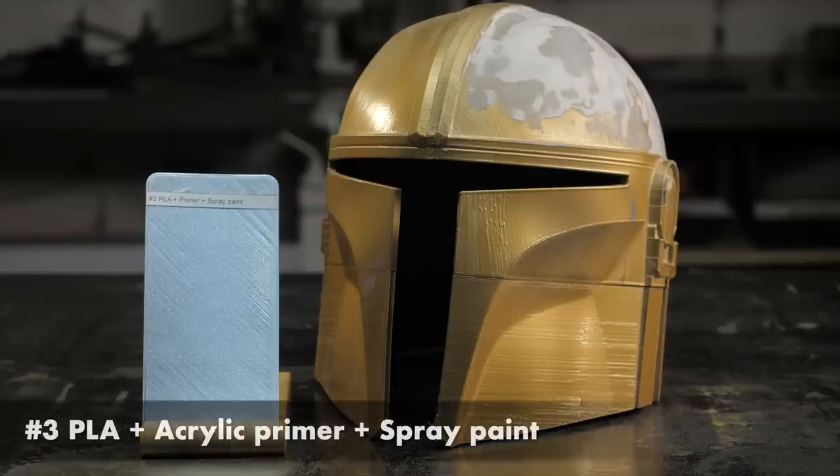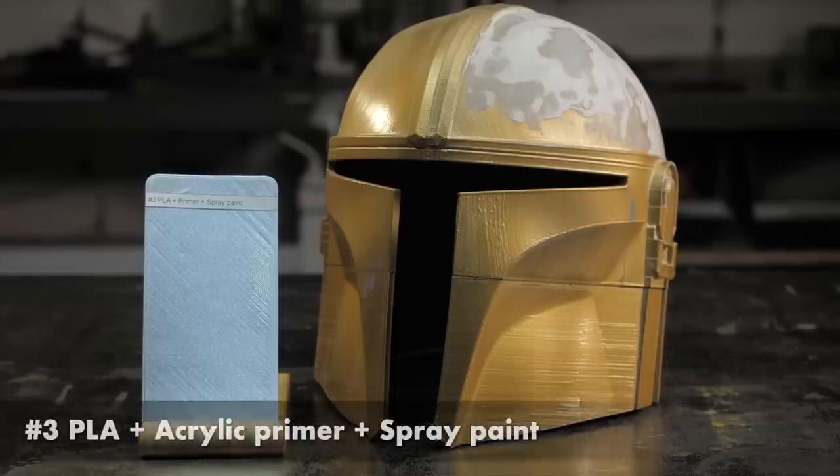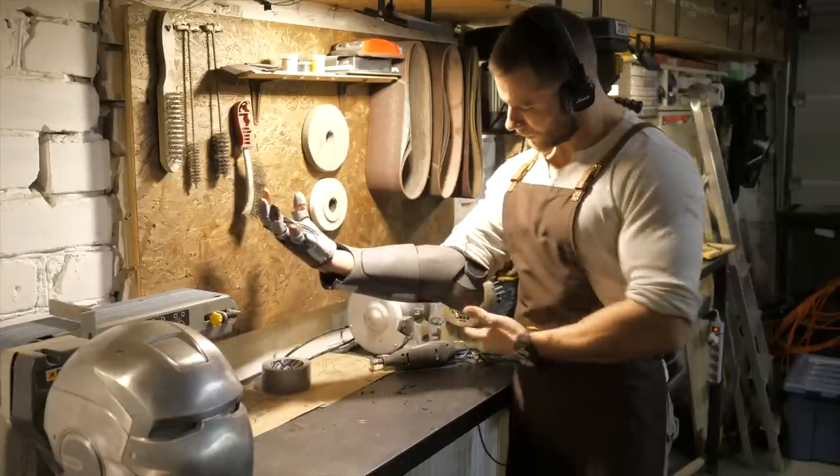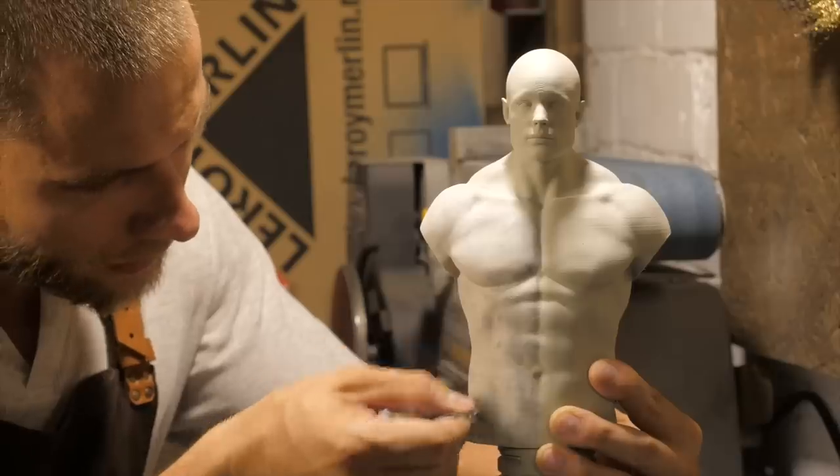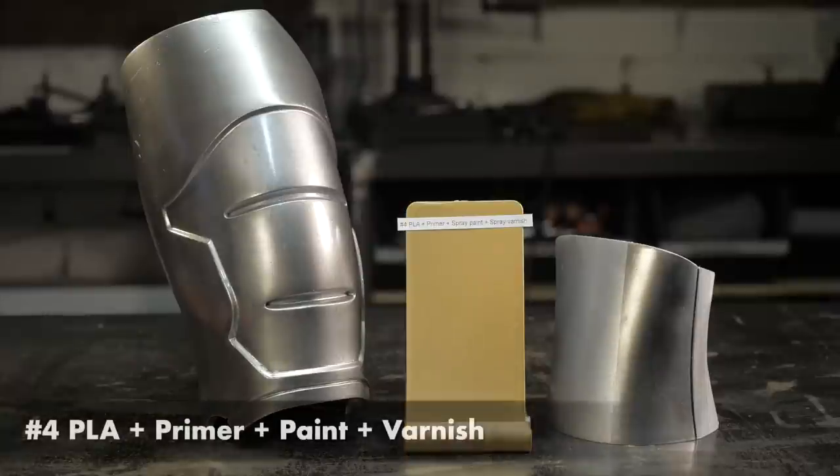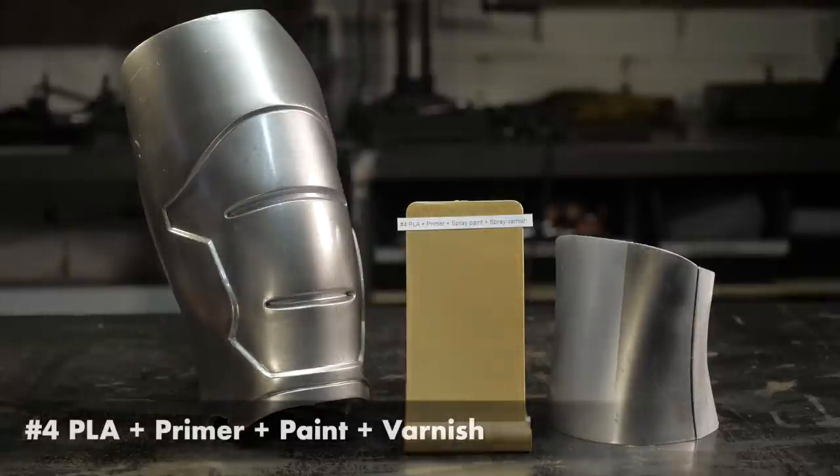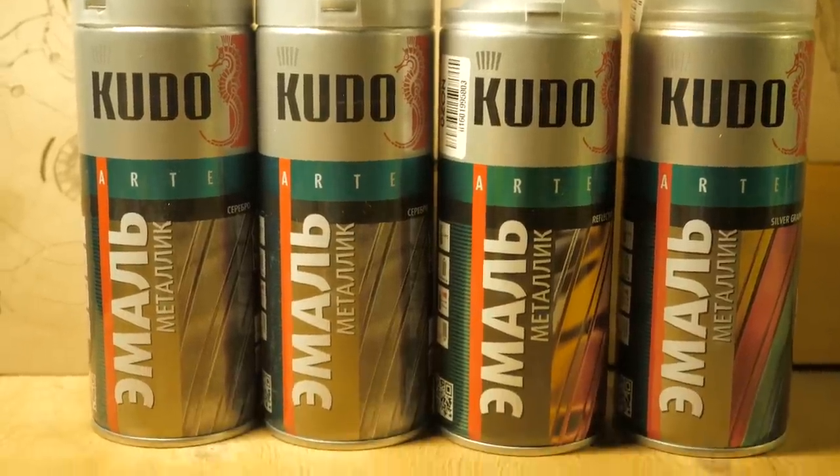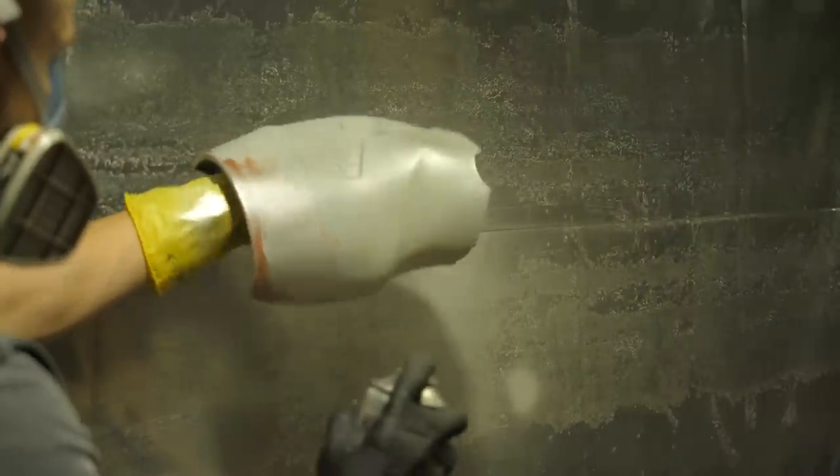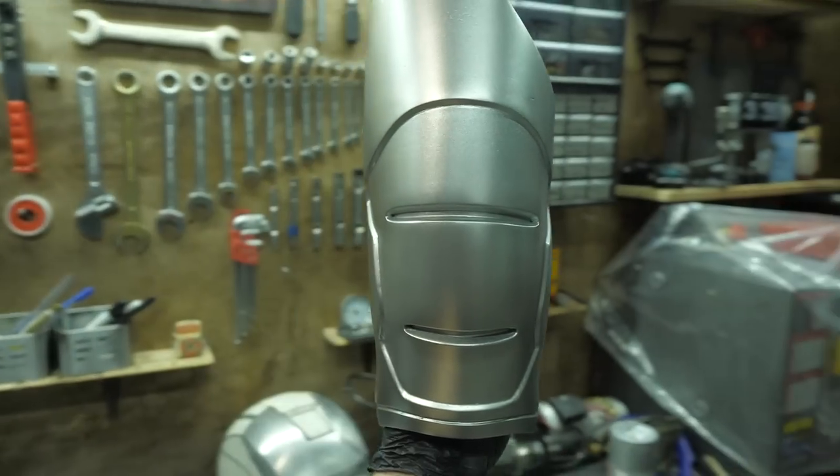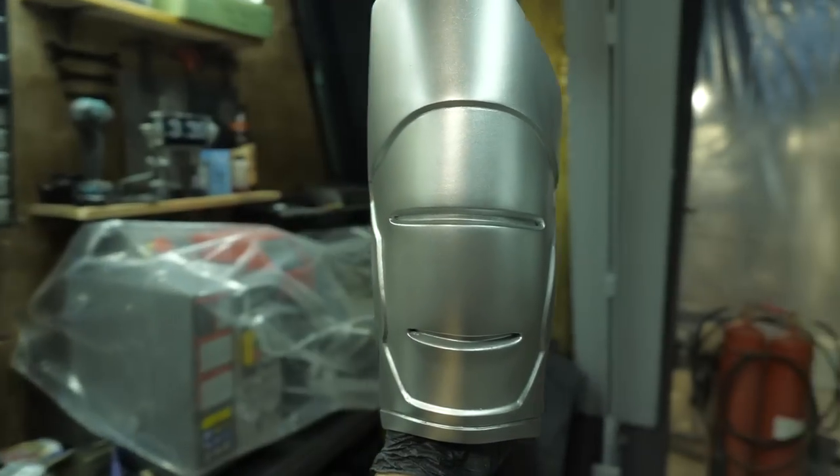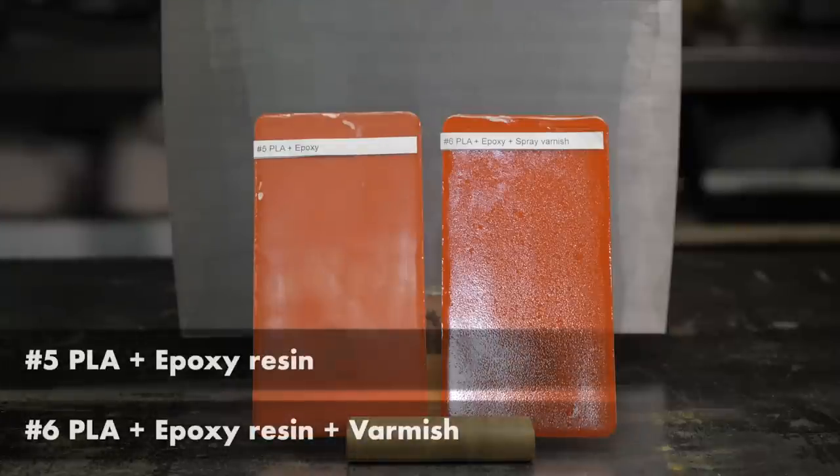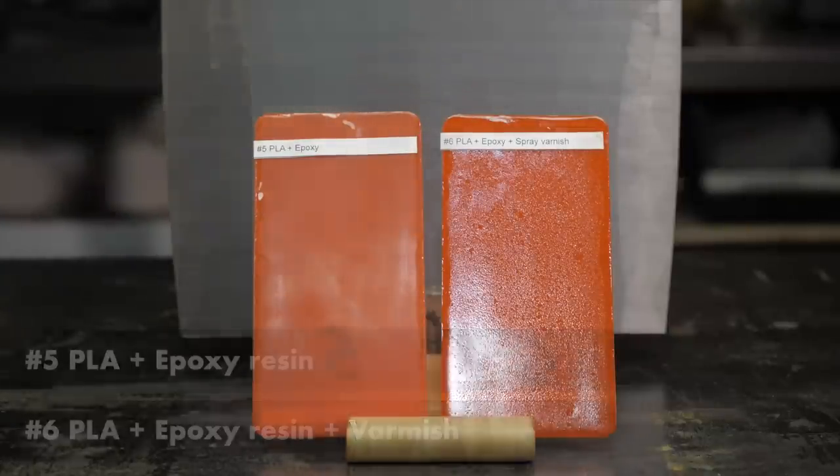Number 3: PLA Acrylic Primer and Spray Paint, classic combination of materials for cosplay suits and other DIY printed crafts. Number 4: The same PLA primer and paint, but all this covered by acrylic varnish to finally determine which is better. Paint over and touch up the scratches, or cover the paint with varnish and try to polish scratches on it.